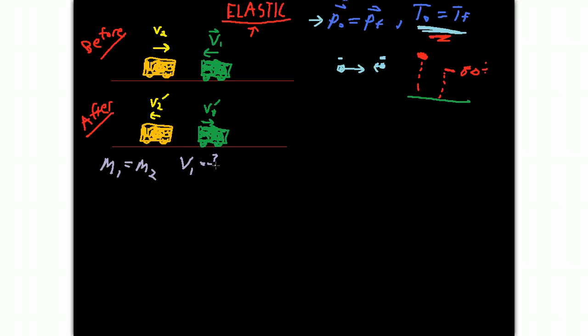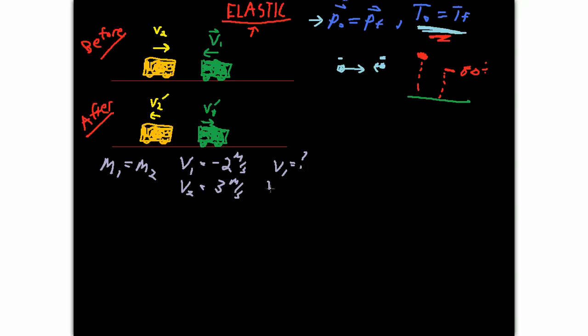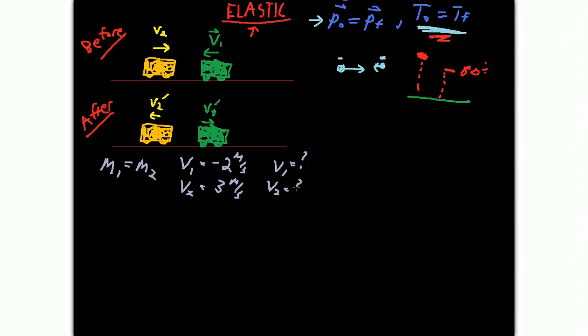So the first thing I'm going to do is rewrite this. So the initial velocity for cart 1, I'm going to say it's negative 2 meters per second. And the initial velocity for cart 2, I'm going to say it's 3 meters per second. And what I want to find from this is how fast both of these carts will be going after the collision occurs. I have a feeling that they're going to be bouncing off in opposite directions, but I'm going to leave it blank for now. I just don't know.